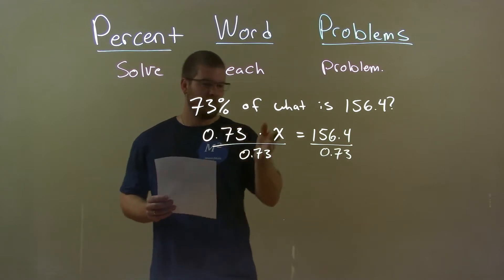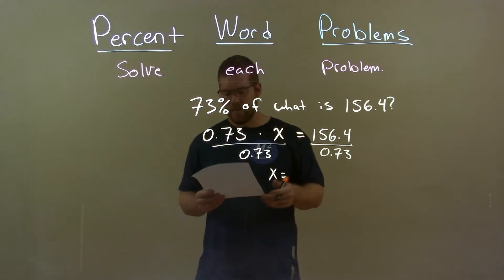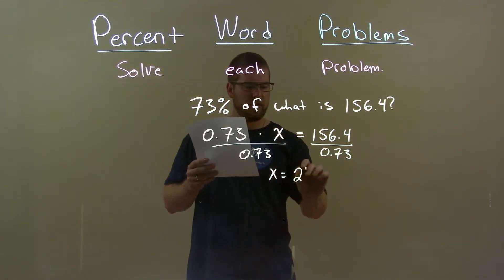To get x by itself, x equals 156.4 divided by 0.73, which is 214.2.